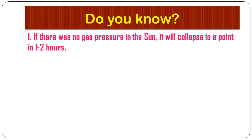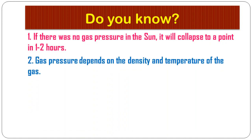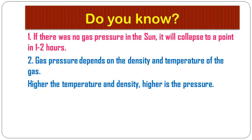If there were no gas pressure in the sun, it would collapse to a point in just one to two hours. Gas pressure is therefore very important to keep the sun stable. Hydrogen, helium, and other gases all contribute to making the sun stable. Gas pressure depends on the density and temperature of the gas — the higher the temperature and density, the higher the pressure.